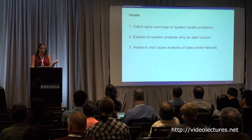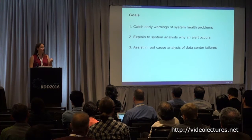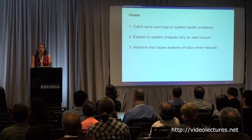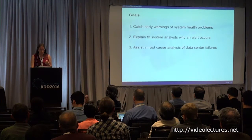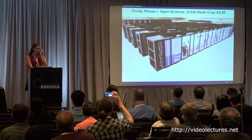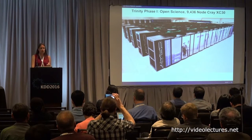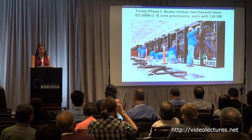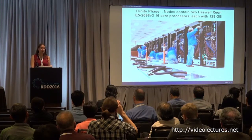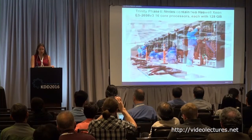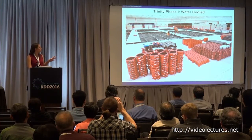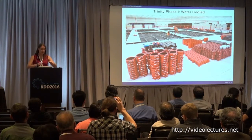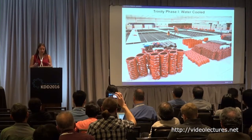The holy grail is to assist in root cause analysis for the analyst — not just that the sensor is weird, but what on the machine is actually causing that weird reading. We're going to be talking about data from the Trinity supercomputer during phase one of its operation, which is open science before it moves into any classified government area. This is a 9,500-some node machine, where each node has two 16-core processors, each with 128 gigs of main memory. Interestingly, Trinity is also water cooled.